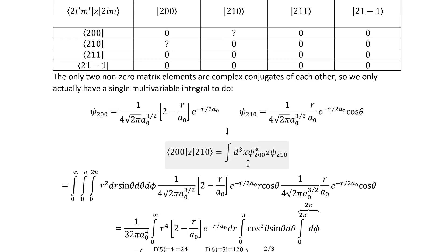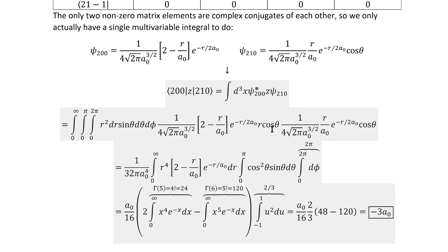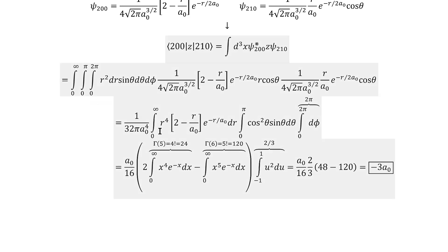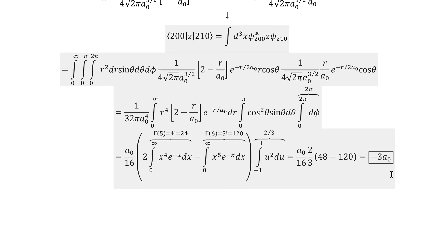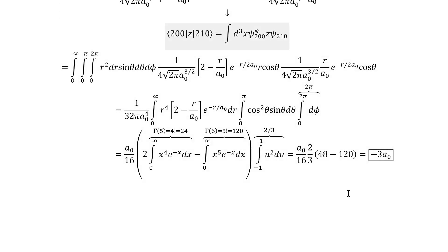Plugging those into the integral that we need to calculate immediately gives us this. We can then separate it by variables, and then start working out the integrals. It's relatively straightforward multivariable calculus, and the answer is negative three a-naught, where a-naught is the Bohr radius, of course.